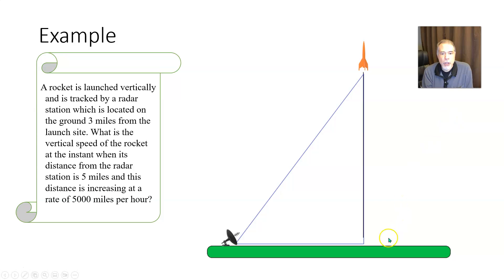So here's a picture. We've got a rocket that's being launched vertically going straight up into the air and it's being tracked by a radar station which is located on the ground three miles away from the site where the rocket was launched from.